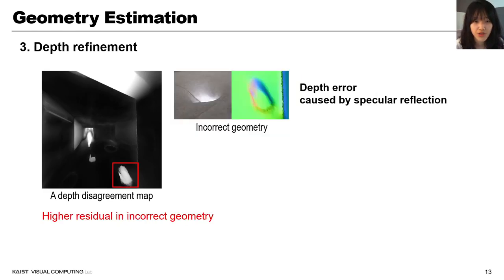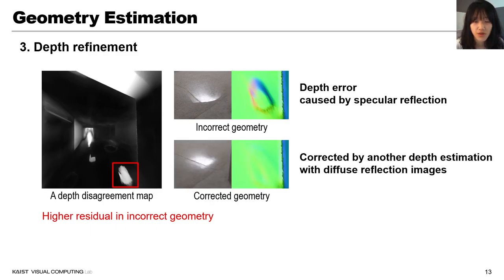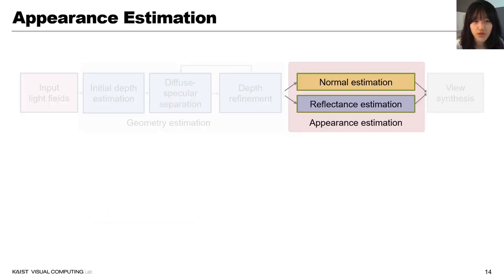To refine the initial depth map, a depth disagreement map is calculated by summing the squared distance to the camera ray using the previous formula. Owing to the specular reflection, our depth estimation fails, resulting in high residual errors in the depth disagreement map. Those are filled by another depth estimation on diffuse-only images. Although the initial depth map is based on diffuse assumption, depth error by specular reflection is gradually relaxed by our iterative approach.